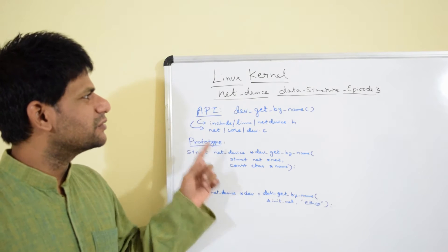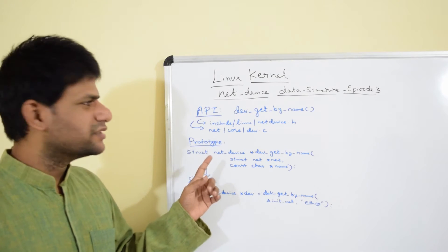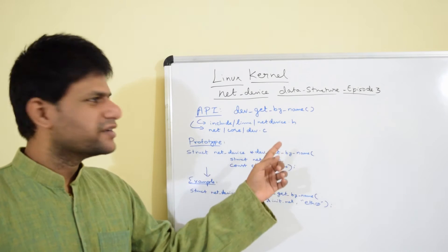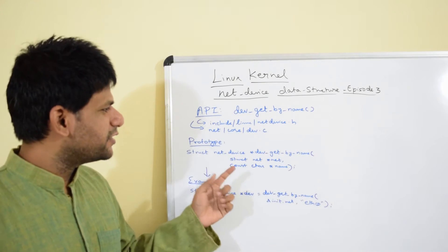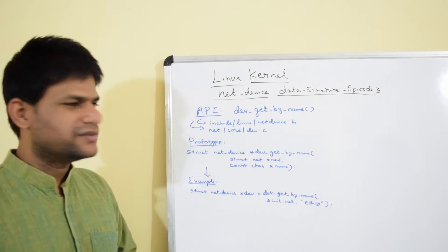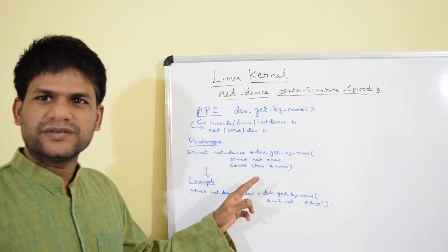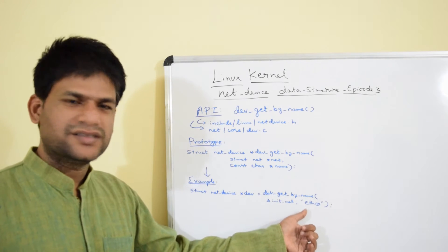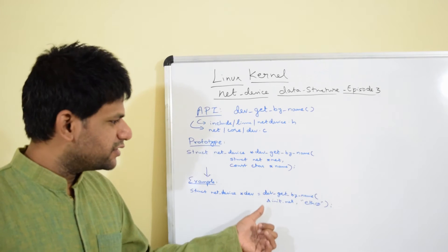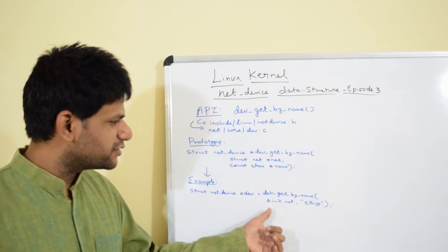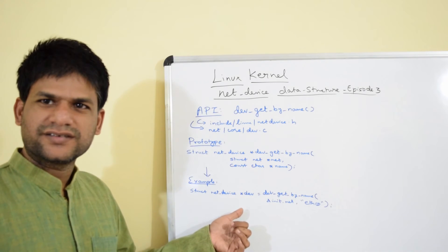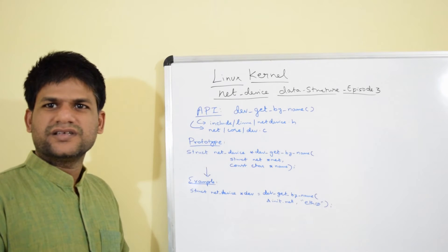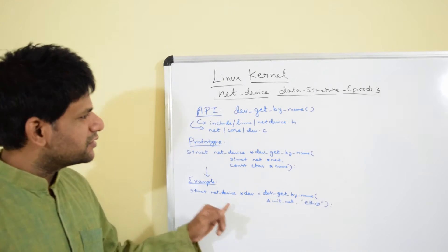This episode I am going to discuss about `dev_get_by_name`, which is also called the `dev_get_by_name` API. As the name says, it is quite useful anytime you want to get the net_device data structure instance by port name. For example, if you want the data structure instance of port e0, you can use this API with the global struct net context and then fetch the device data structure instance.